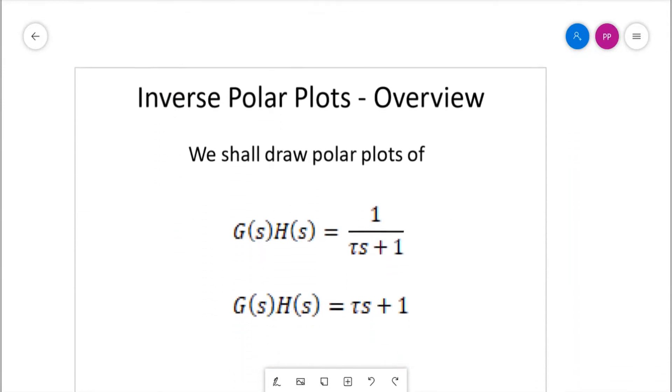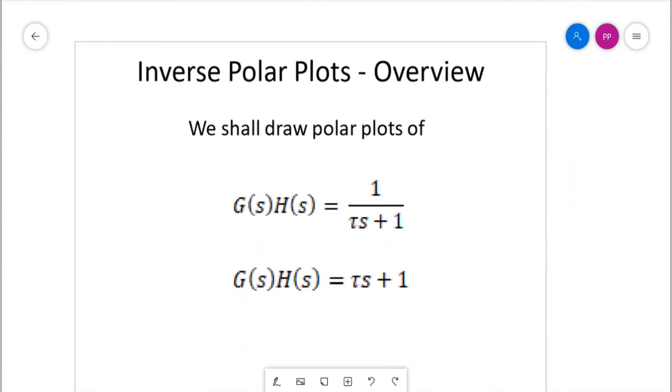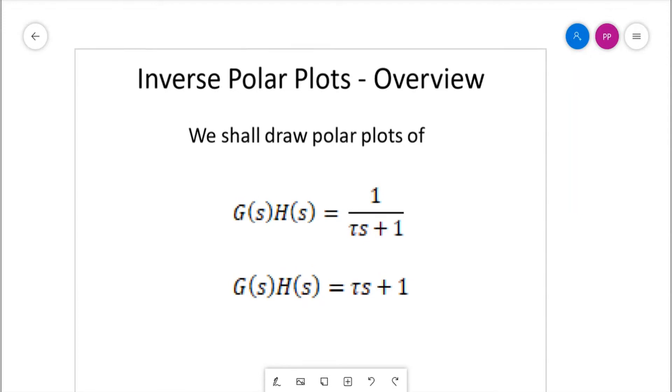The two functions we shall learn today are G(s)H(s) equal to 1/(τs+1), and the inverse of this function is τs+1. So if I ask you to find the inverse polar plot of 1/(τs+1), you have to find out its inverse, which is τs+1, and draw its polar plot.